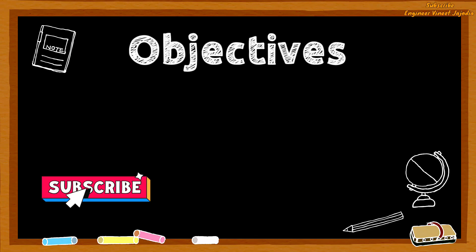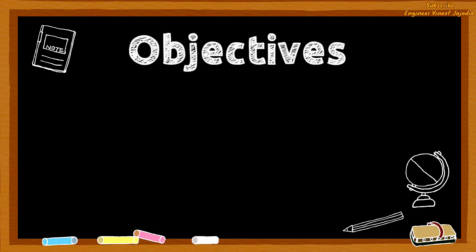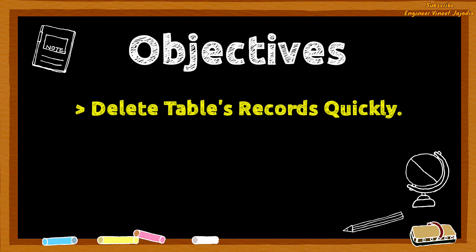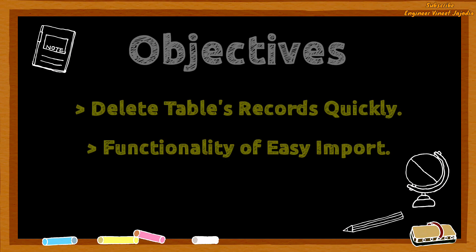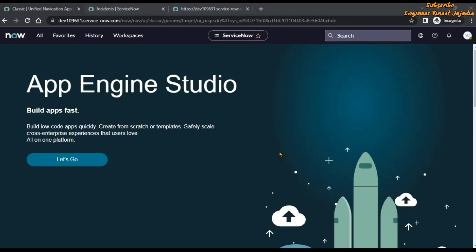Hello everyone, welcome back to the channel. In today's video we are going to discuss how we can delete all the records of a table in ServiceNow very quickly, and we are going to see the functionality of Easy Import — how we can easily import data into a table of ServiceNow. Let's assume that we have to delete all the records of the incident table. We are going to see the approaches through which we can do this, but they are not very quick.